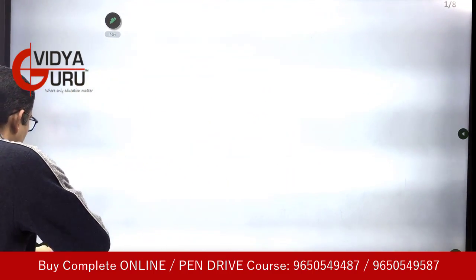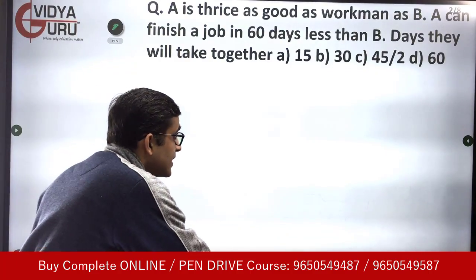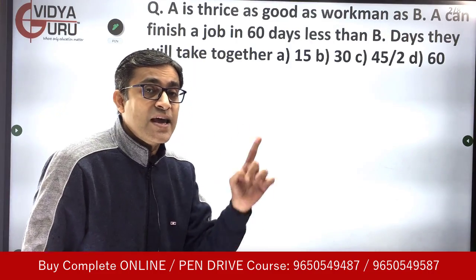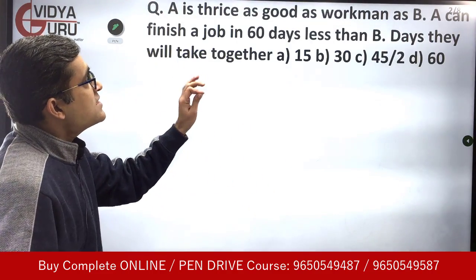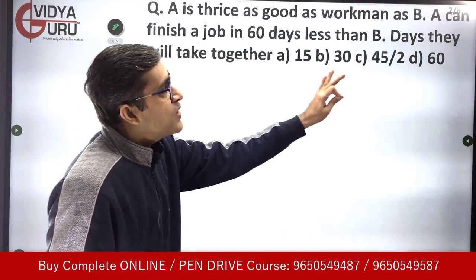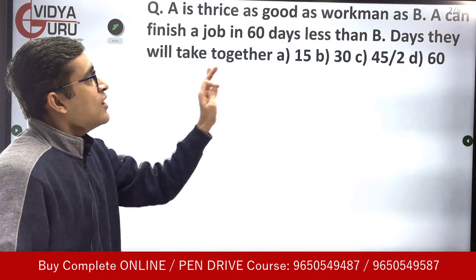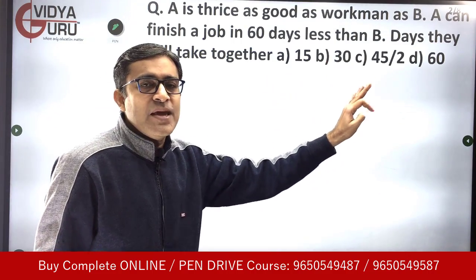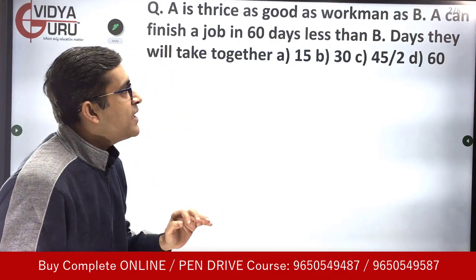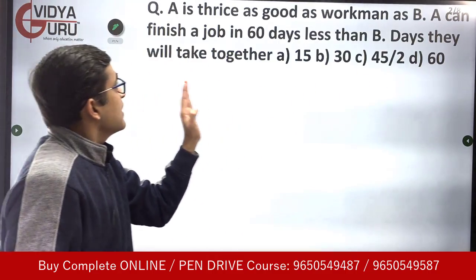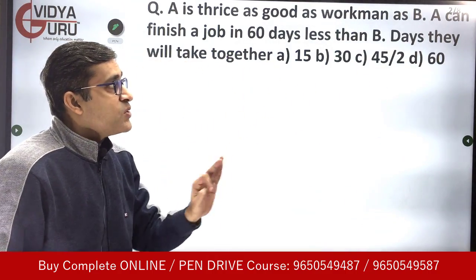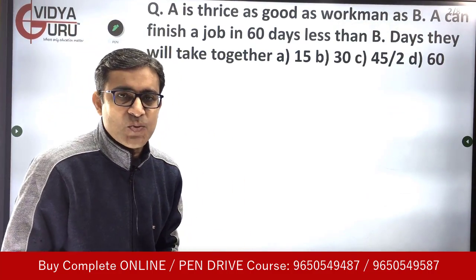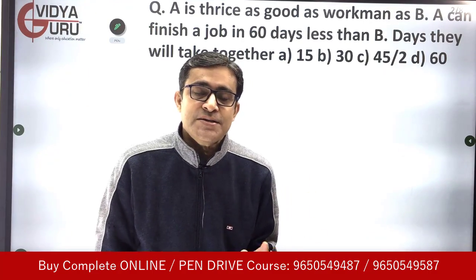Let's look at the first question. The method I am going to teach you is going to be very simple, so follow it carefully. The question says: A is thrice as good a workman as B. A can finish a job in 60 days less than B. Find the number of days they will take to complete the work together.